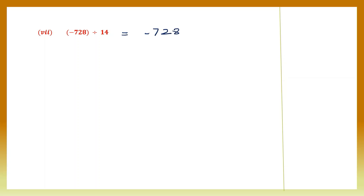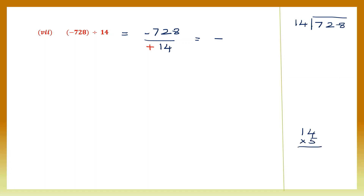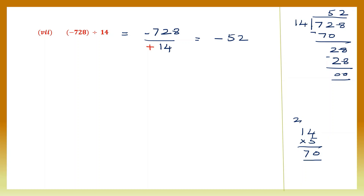Question 7: minus 728 divided by 14. 14 doesn't have a sign so let's give it a plus sign — signs are different, so the answer is negative. Dividing 728 by 14: we need a number close to 72, so try 14 into 5 which gives 70. Subtract — bring down 8 to get 28, and 14 into 2 is 28. Quotient is 52, so the answer to this question is minus 52.